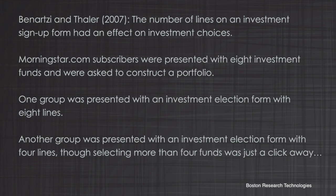To demonstrate this concept of choice architecture, Shlomo Benartzi and Richard Thaler did an experiment related to the number of lines on an investment signup form and showed that it had an effect on investment choices. The experiment involved Morningstar.com subscribers who were presented with eight investment funds and asked to construct a portfolio. One group was given an investment election form with eight lines; another group was given a form with four lines, where selecting more than four funds was just a click away.